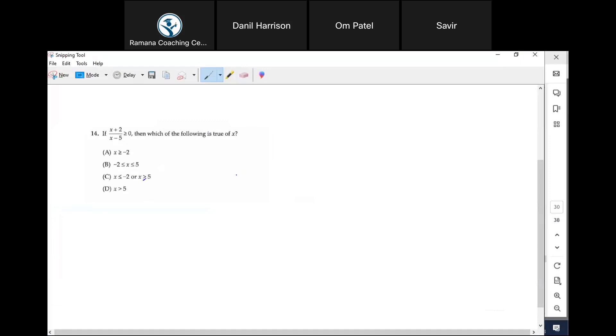There is a typo in the question - that should have been an equal sign. Now you have a ratio. Is it greater than or equal to zero? So in one instance you need to be equal to zero, in another instance you need to be greater than zero, agree?